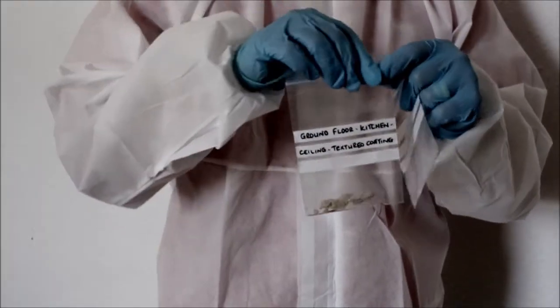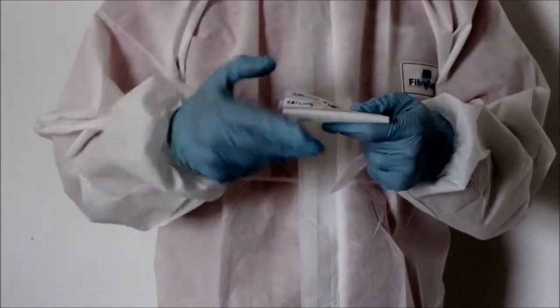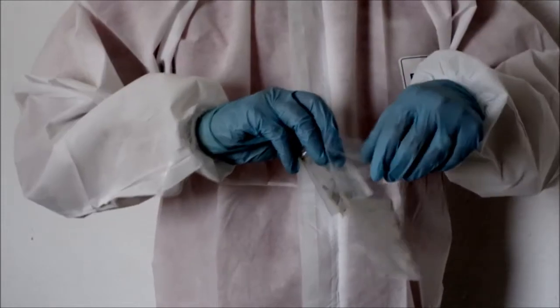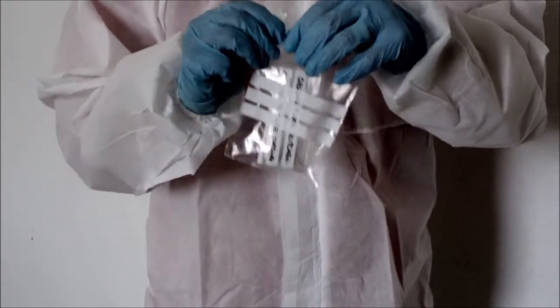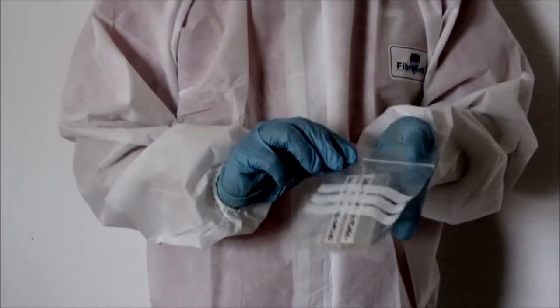Seal the sample bag and write the location of the sample on the writing panel on the bag. Place this bag into another sample bag. Seal it and write the location of the sample once more on this bag. This description of the sample is also to be written on your sampling form enclosed with the kit.